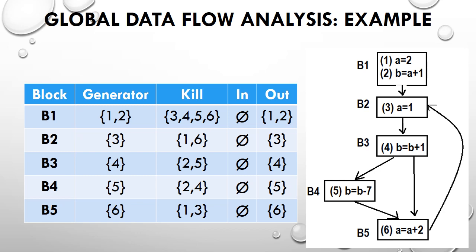For the in values, B1 takes no input. B2 takes input from B1 and B5 blocks, but initially we set the input of every block to the empty set (∅), meaning no input. In subsequent iterations we can update these values.